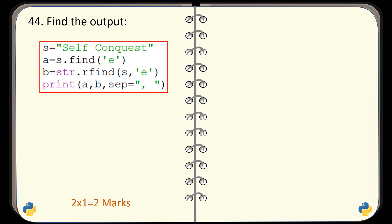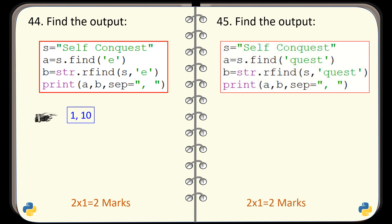Question number 44. A code is given and you have to find the output of this code. And the correct output is this one. Question number 45. Again, a code is given and you have to find the output of this code. And the output is this one.